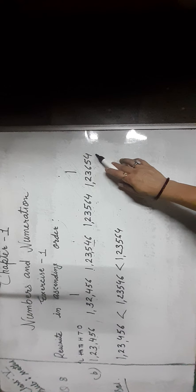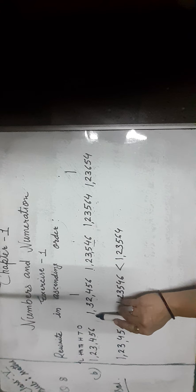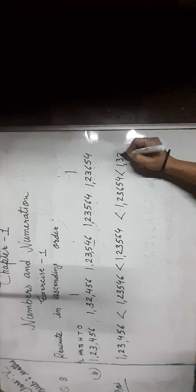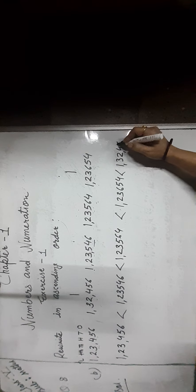Now compare the remaining numbers — 1,32,456 and 1,23,654. The hundreds place digit is 3 here and 2 here. Two is smaller than 3, so we write 1,23,654 next. At last, we write 1,32,456.